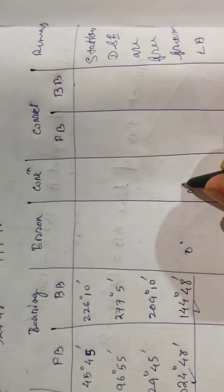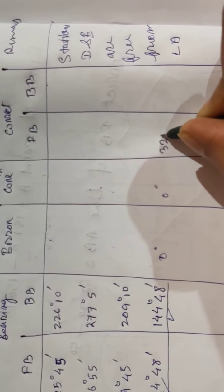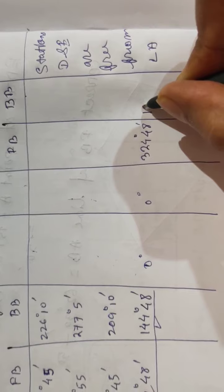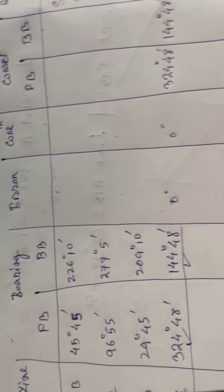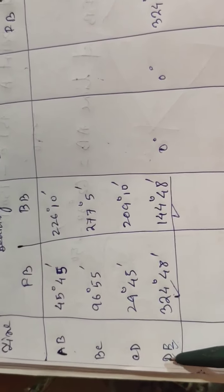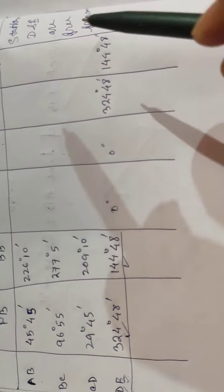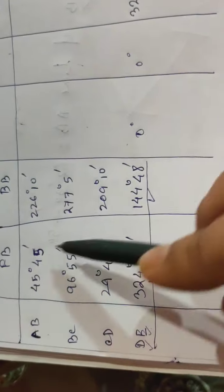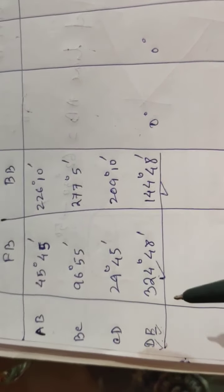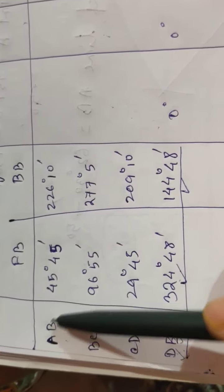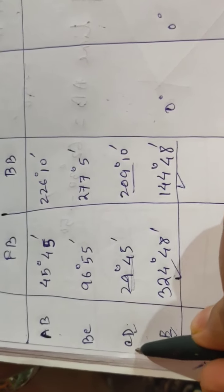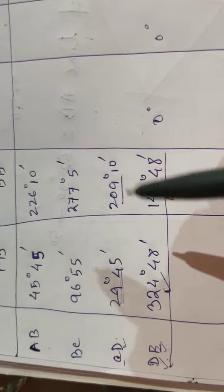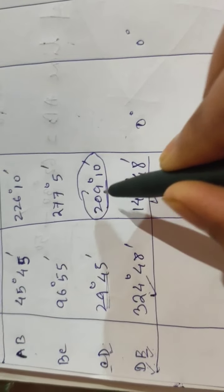There is no error and no correction needed — the given readings are the corrected readings because there is no local attraction. All readings taken from station D and E are correct. If there is any reading in the other lines taken from station D or E, those readings are also correct. In line CD, there is a point D — the reading taken from point D is also correct.